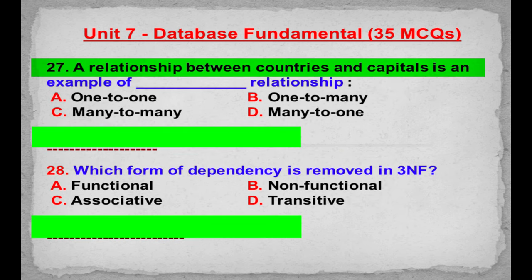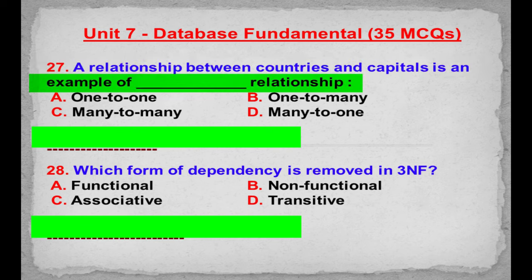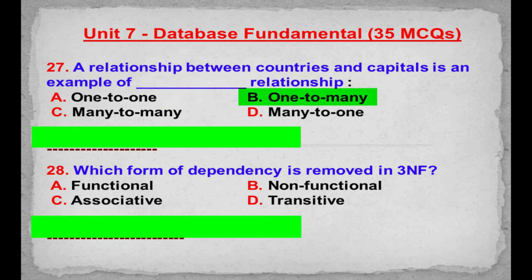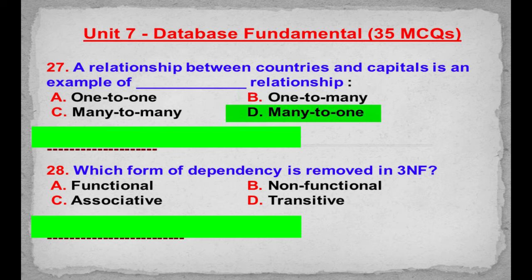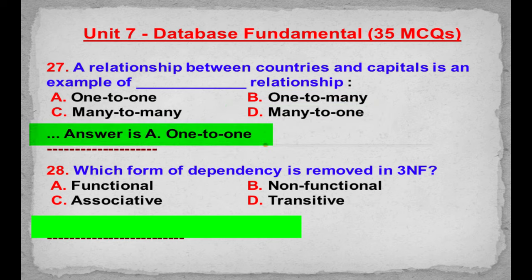MCQ number 27: A relationship between countries and capitals is an example of what type of relationship? Option A: One to one. Option B: One to many. Option C: Many to many. Option D: Many to one. Correct answer is Option A: One to one.